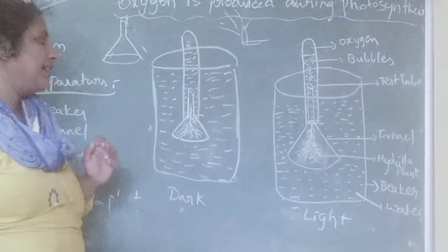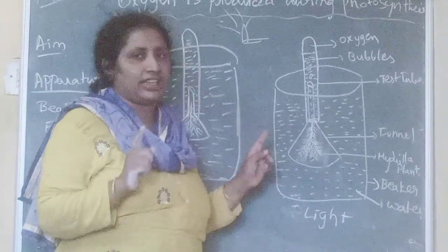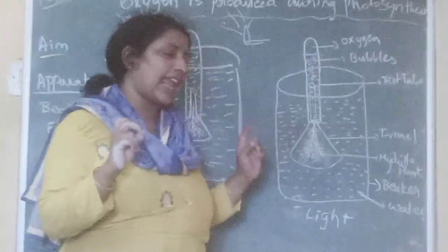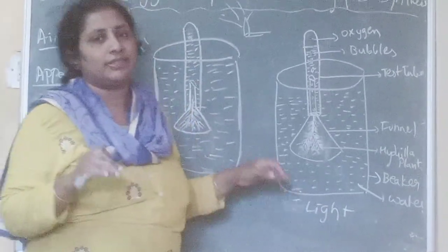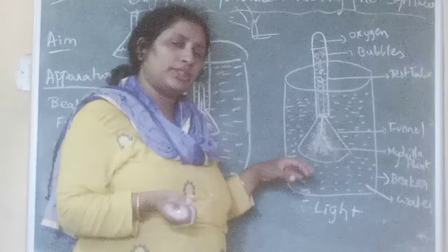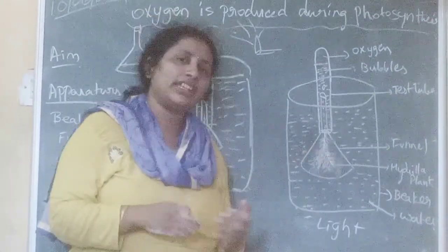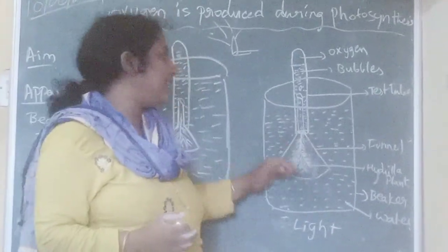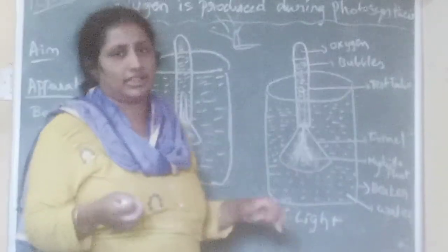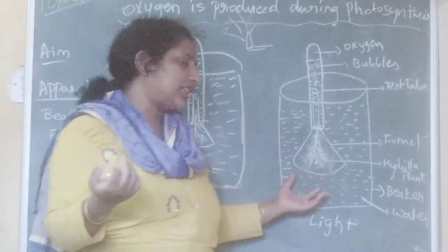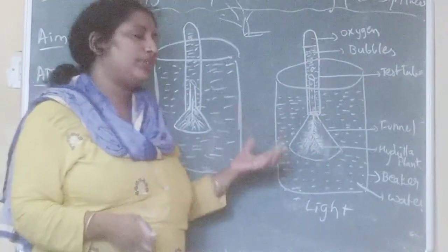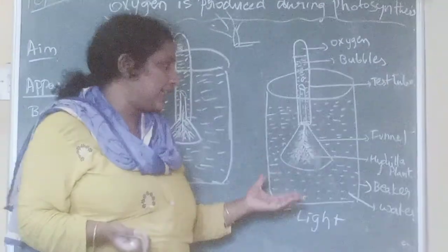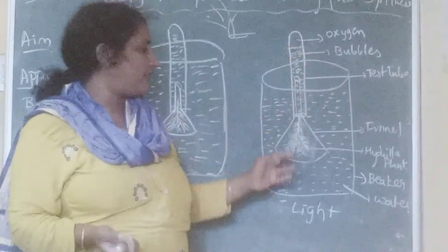Why should you definitely take a glass funnel? Because light can pass through glass, as glass is transparent. Why are we using a hydrilla plant? As the hydrilla plant is an aquatic plant, we can clearly observe photosynthesis and the evolution of gas. If you take any aquatic plant — not only hydrilla — you can use it, because photosynthesis occurs and the oxygen evolved is seen clearly in water. That is why we prefer aquatic plants.